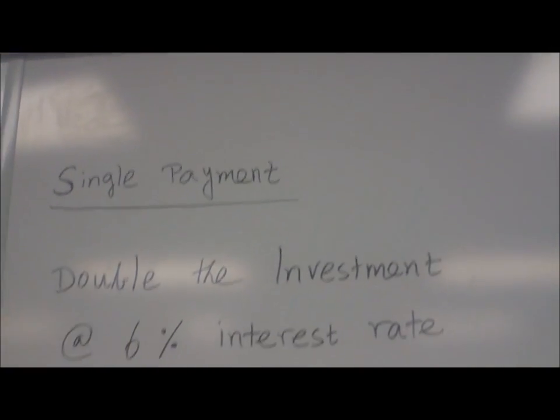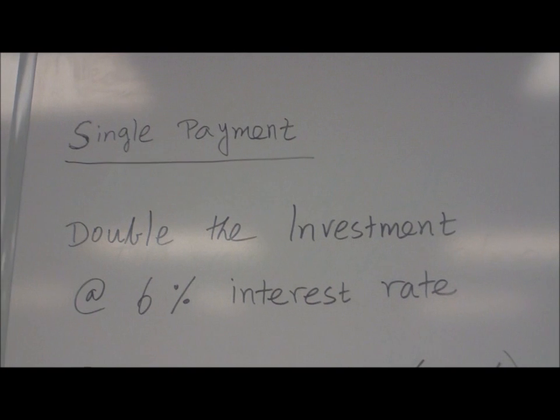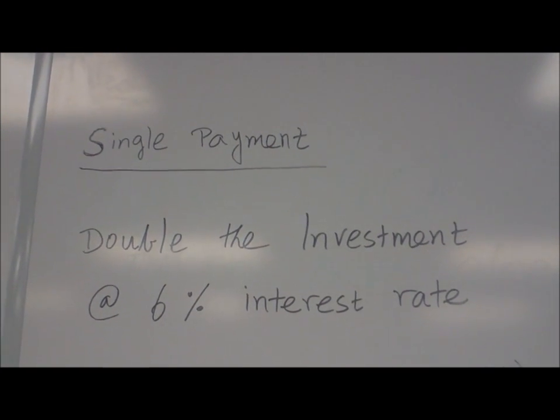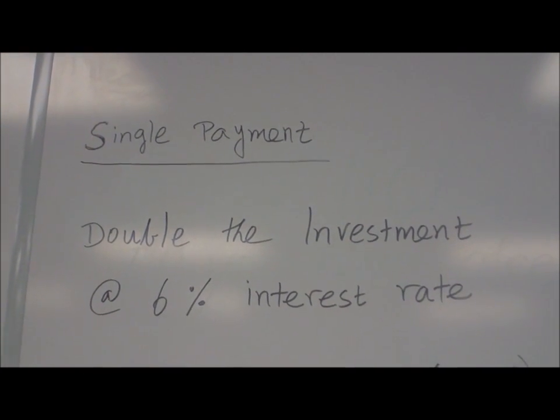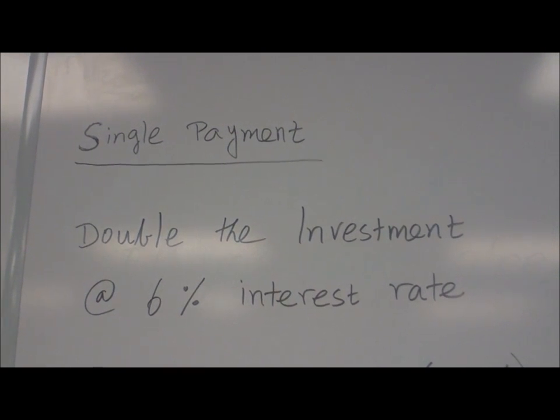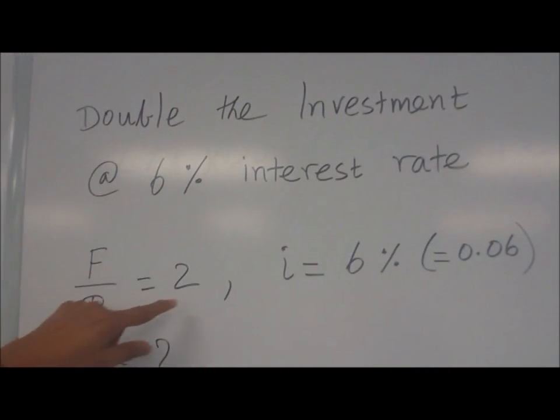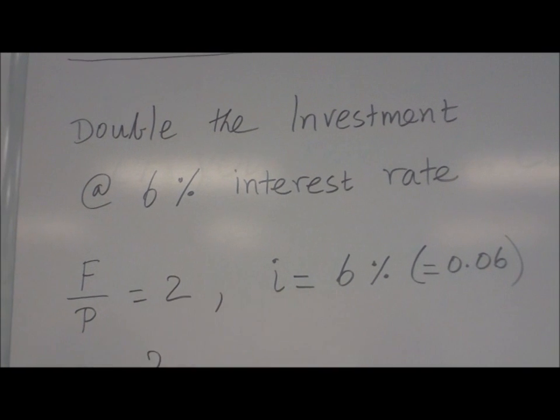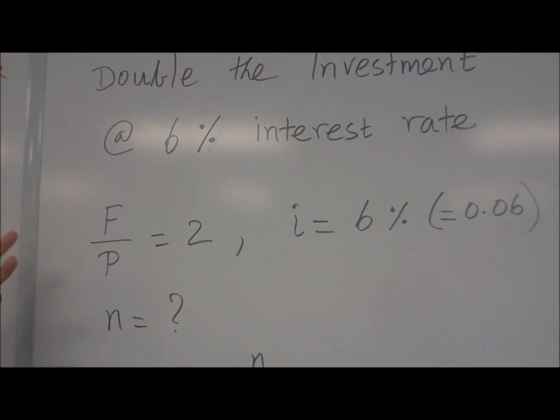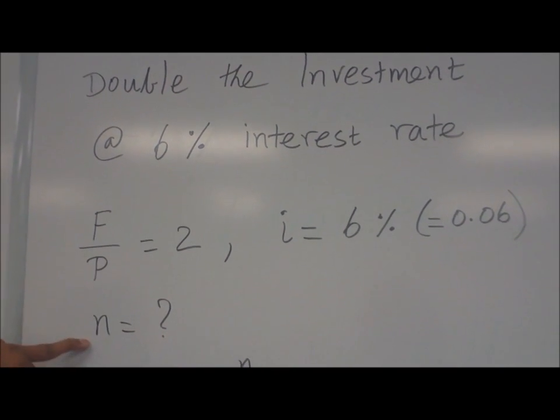Let us see for each category, examples, single payment. Suppose you want to double the investment at six percent interest rate. That means whatever the present value, the future value should be double of that. So F over P equal to two and I equal to six percent. How many years you can do that? That's what you need to find. N equal to what?